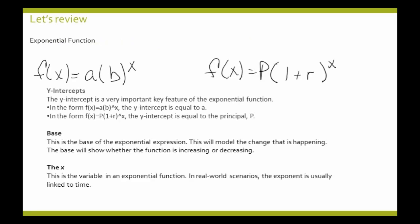We have two formats: f of x equals a times b raised to the x power, and f of x equals p times 1 plus r raised to the x power.